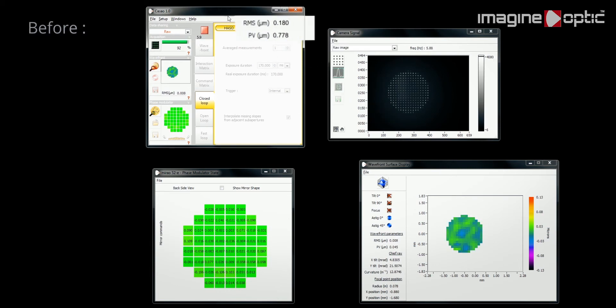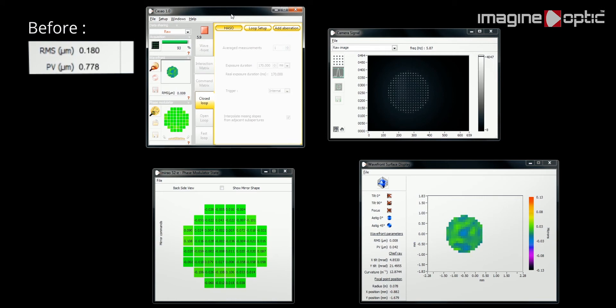In this example, the flatness of the wavefront based on its RMS value improves from 180 nm RMS to 9 nm RMS.